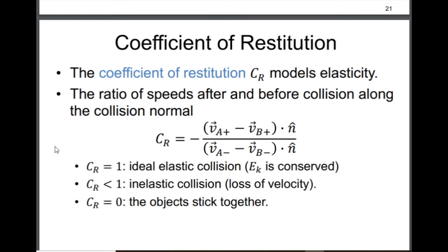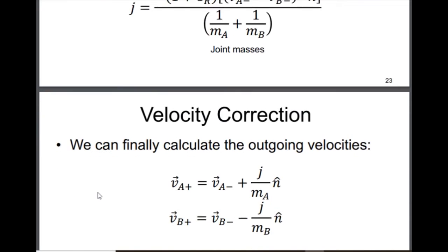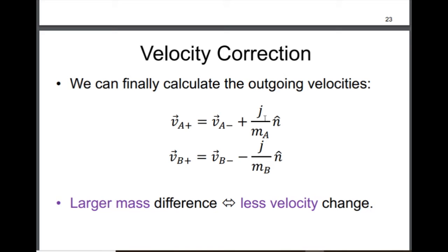That's what I call elasticity in my code. One slide later, what I see here is the change of the separating velocity — this is the value before minus the value after — and here it's dividing by the sum of the inverse masses. The result of that will be the magnitude of the impulse, represented by the J symbol. After I get the magnitude of the impulse, I multiply it by the normal unit vector to get the impulse vector, then divide by the mass — which is the same as multiplying by the inverse mass — and I either add or subtract this value from the original velocity, depending on the direction of the normal vector.